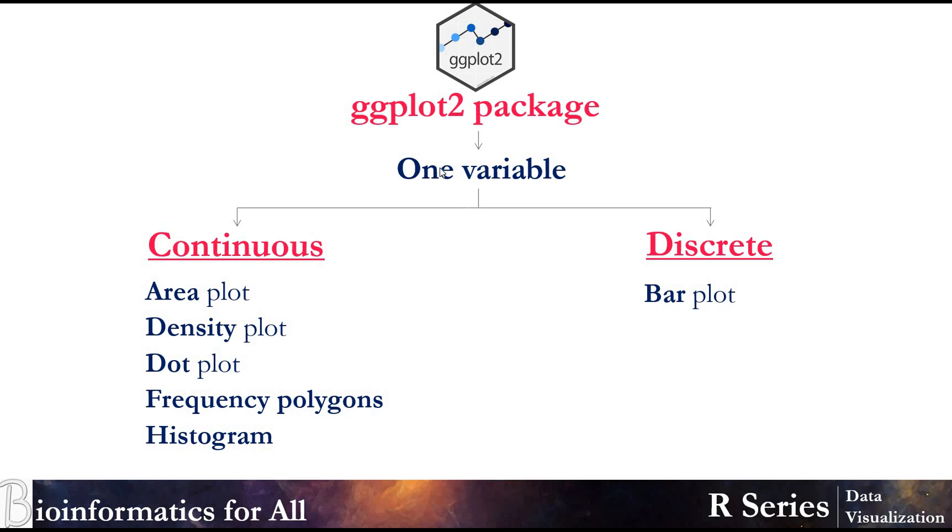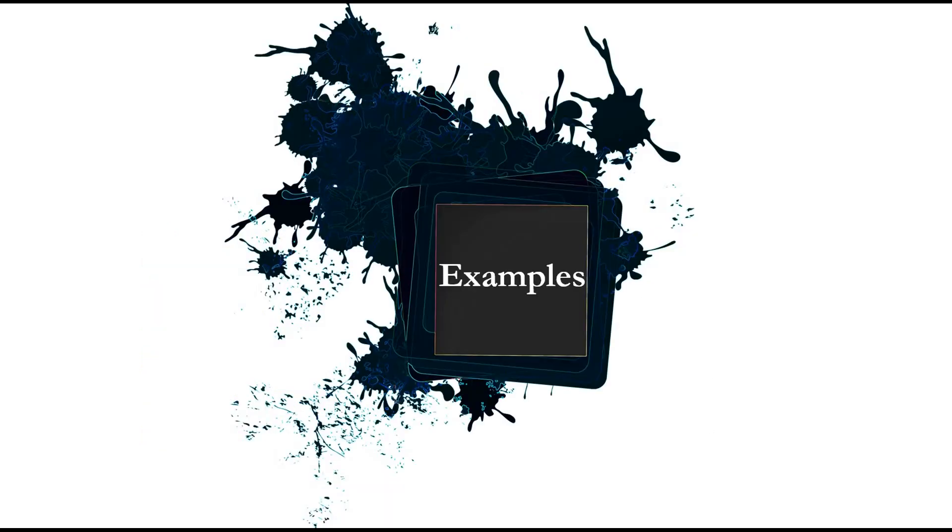So today we'll talk about just one variable. As we discussed, we have continuous and discrete. For continuous variables we can use area, density, dot plots, frequency polygons, and histograms. For discrete we can only use bar plot. So let's go and check the examples.